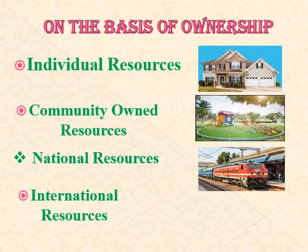On the basis of ownership, resources are classified into four types. First, individual resources — these are owned privately by individuals, for example plantation, offshore land, farmland, water in wells, ponds, etc. Second, community owned resources — these are accessible to all members of the community, for example grazing grounds, burial grounds, ponds in villages, and public parks.